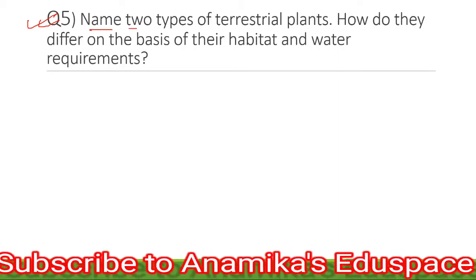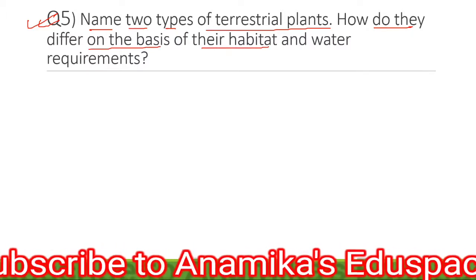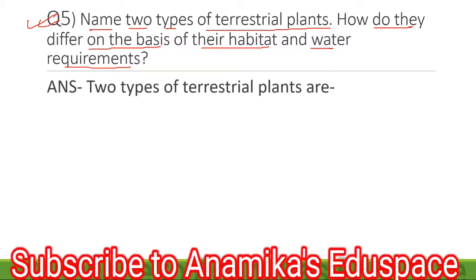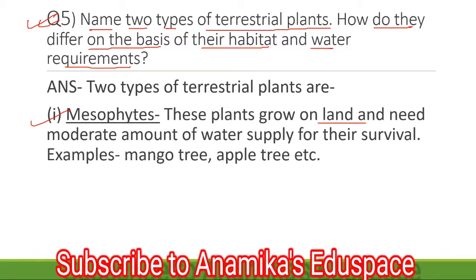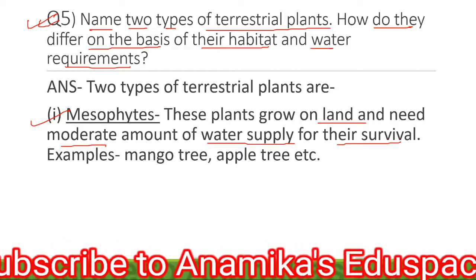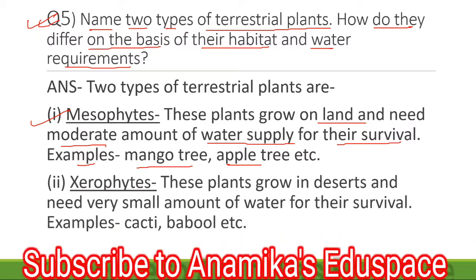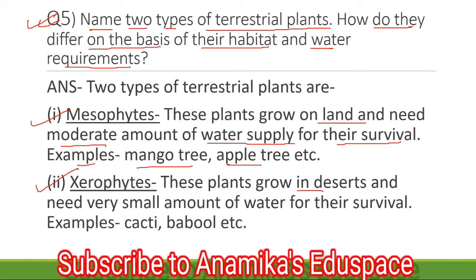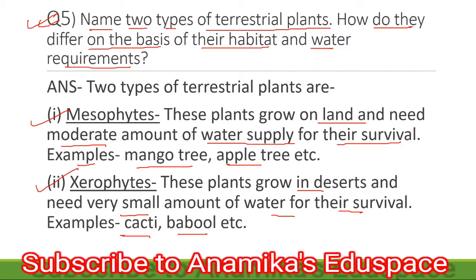Number 5: Name two types of terrestrial plants. How do they differ on the basis of their habitat and water requirements? Two types of terrestrial plants are: Number 1 — Mesophytes: these plants grow on land and need a moderate amount of water supply for their survival, for example mango tree, apple tree, etc. Number 2 — Xerophytes: these plants grow in deserts and need a very small amount of water for their survival, for example cacti, babul, etc.